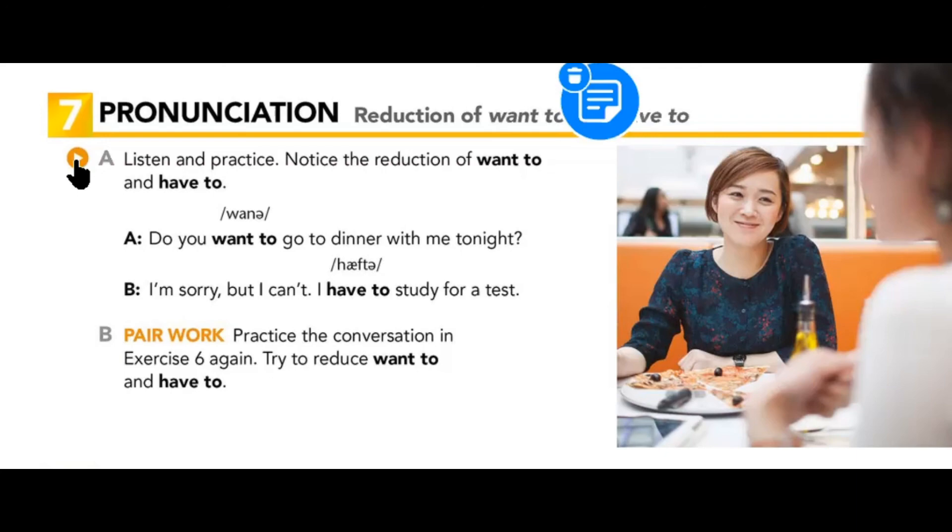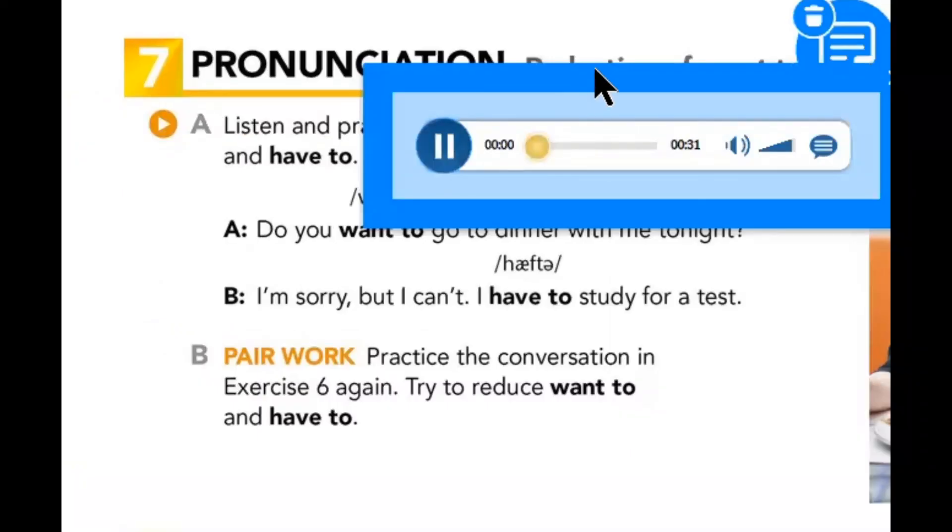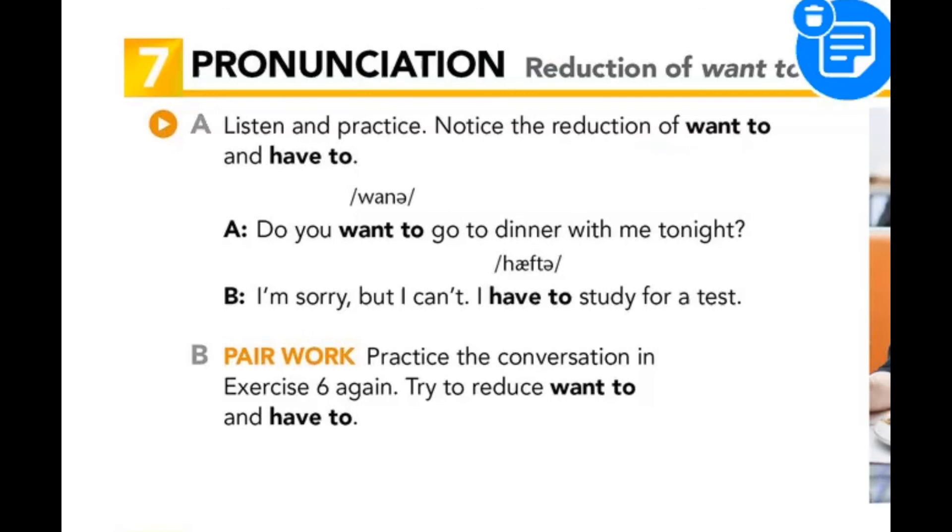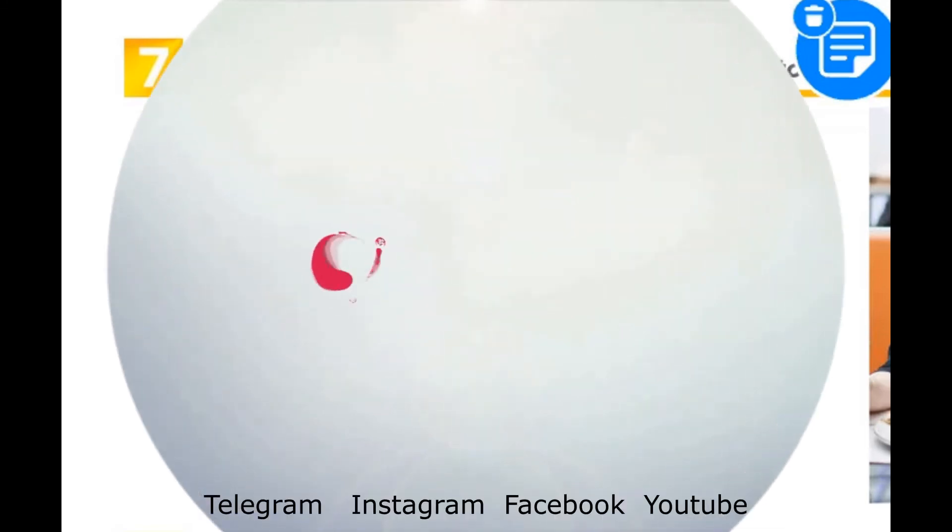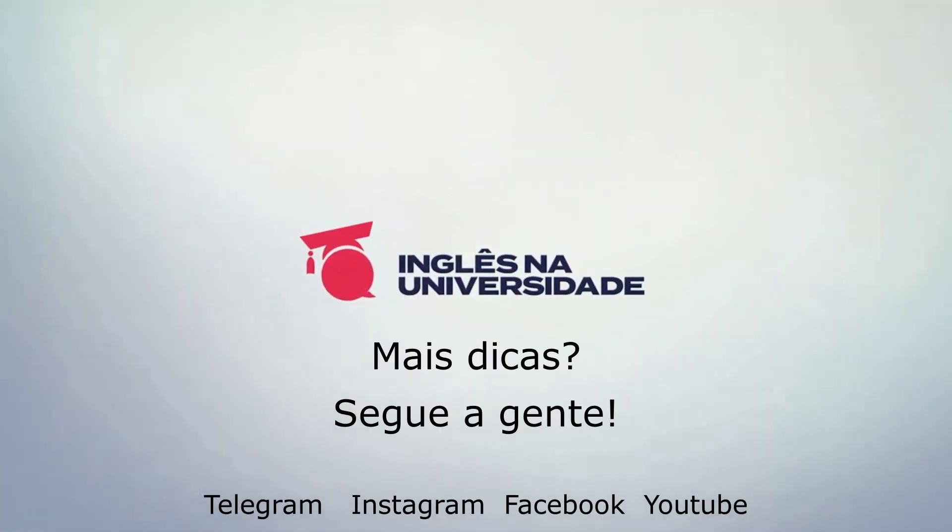Page 109, Exercise 7. Pronunciation. Reduction of want to and have to. Part A. Listen and practice. Notice the reduction of want to and have to. Do you want to go to dinner with me tonight? I'm sorry but I can't. I have to study for a test. I have to study for a test.